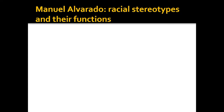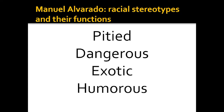Alvarado pointed out that there are four major racial stereotypes which crop up time and time again in media products and news broadcasts. The first stereotype we often see is the idea of ethnic minorities as being pitied — that people of ethnic minorities are pathetic, poor, vulnerable, and weak, and most importantly, that they need to be helped by a hegemonically accepted white audience. The most clear example of the pitied stereotype in A-level media studies is the WaterAid advert, which is actually a fairly positive representation of African people.